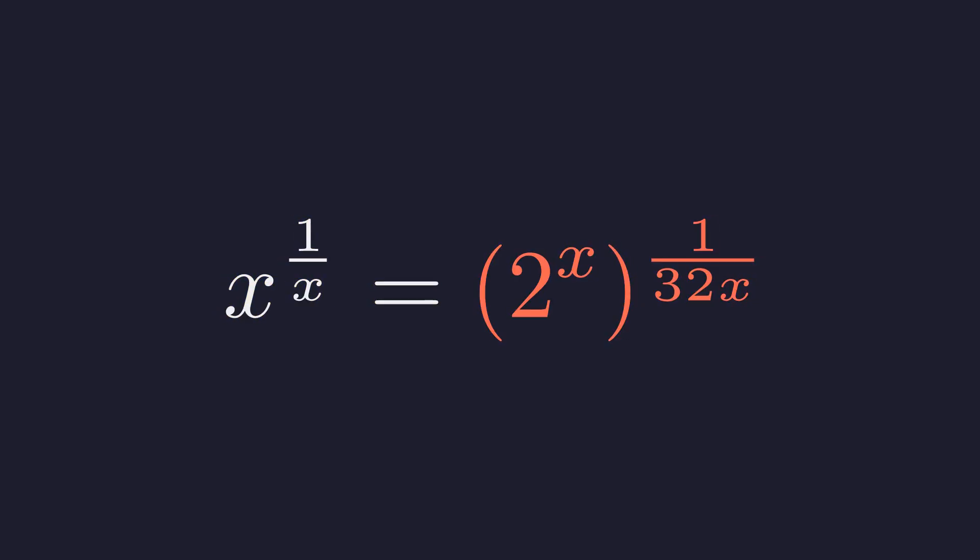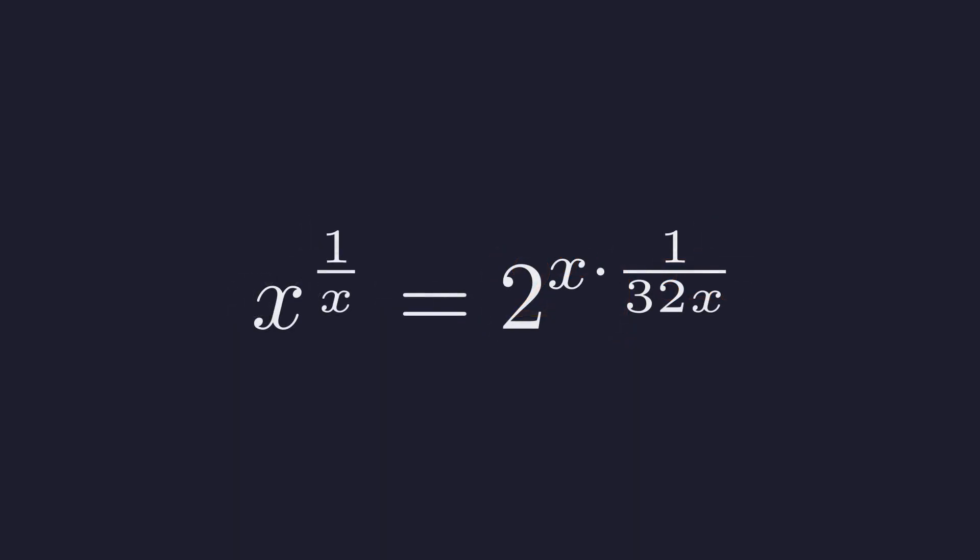Now let's apply the same reasoning to the right side. The exponent becomes x times 1 over 32x. Here the x in the numerator cancels with the x in the denominator, leaving us with 2 to the power of 1 over 32x. This is the form we'll work with.